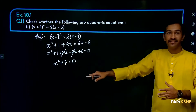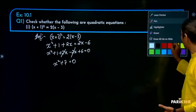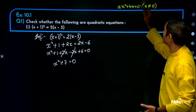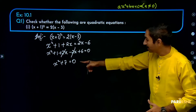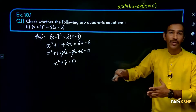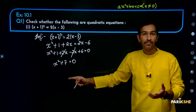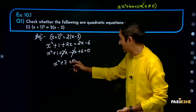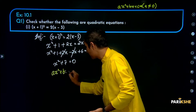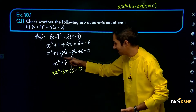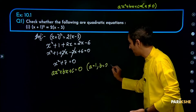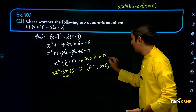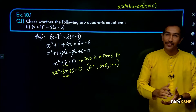Is this in the form of a quadratic equation? Yes. The quadratic equation should be in the form of ax squared plus bx plus c, where a is not equal to 0, which is equal to 0. Here a is equal to 1, b is equal to 0, and c is equal to 7. Therefore, this is a quadratic equation.